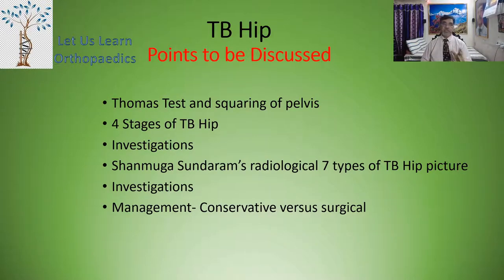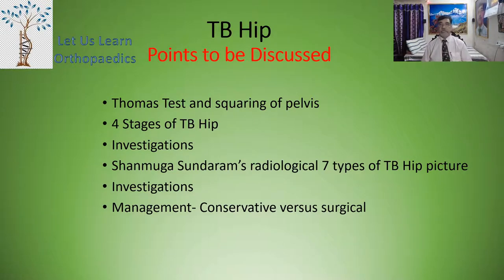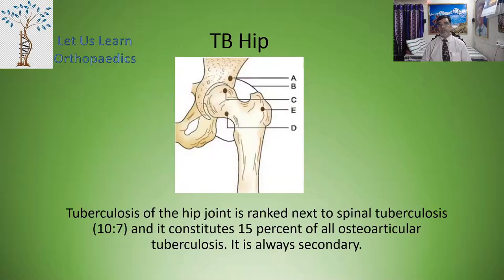Shanmukh Sundaram's radiological seven types of TB hip picture; then investigations; and finally management, including the conservative versus surgical treatment. So, tuberculosis of the hip joint is ranked next to spinal tuberculosis.